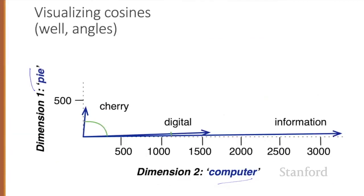Here's a rough graphical demonstration of cosine similarity, showing vectors for the words cherry, digital, and information in a tiny two-dimensional space defined by counts of the words computer and pi nearby. Note that the angle between digital and information is smaller than the angle between cherry and information. When two vectors are more similar, the cosine is larger but the angle is smaller. The cosine has its maximum of one when the angle between the two vectors is smallest, and the cosine of all other angles is less than one.